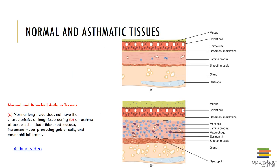Here we can see the difference between normal and asthmatic tissue. An asthma attack includes thickened mucosa, increased mucus-producing goblet cells, and eosinophil infiltrates. Because of these additional structures, glandular secretions, and cells, asthmatic tissue can cause a narrowing of the passageways which makes it difficult for a person to breathe.